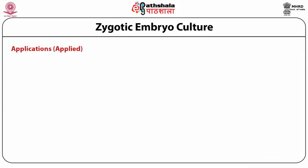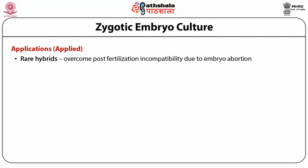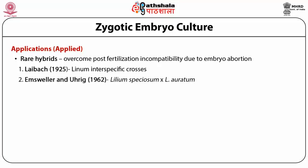The most important application of embryo culture is the production of rare hybrids, first demonstrated by Laibach in interspecific crosses in Linum — the first demonstration that embryo culture can help raise rare hybrids not possible by conventional methods. Similarly, in the cross of Lilium speciosum with Lilium auratum, fertilization and embryo development occurred, but the embryo was very large relative to the endosperm, and when seeds were sown the embryo degenerated. But if this embryo was excised and cultured in artificial medium, it developed into full plants.